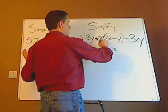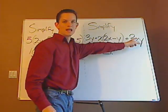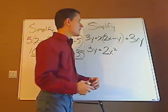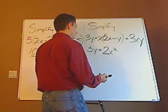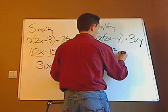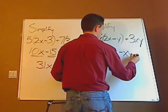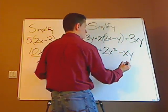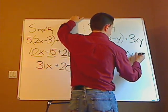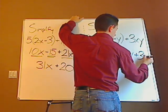Now I can do y times x, but since I have an xy and they're the same, I'm just going to make that xy plus 3xy.